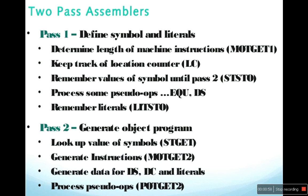Second characteristic: determine the length of the machine instructions. Third: keep track of the location counter — use the location counter in first pass only. Fourth: remember values of the symbols until second pass. Be careful — remembering values of the symbols in first pass; these values are used in second pass. Fifth: process some pseudo-ops like EQU, DC, DS. And remember literals — that is also one of the characteristics of first pass.